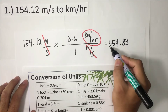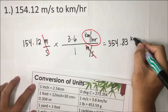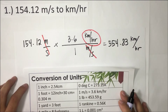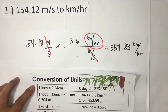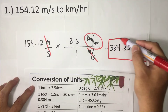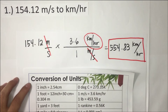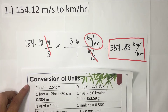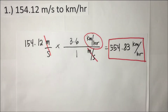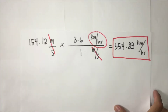Rounding to two decimal places, the answer is 554.83 kilometers per hour. And this is how we convert meters per second to kilometers per hour.